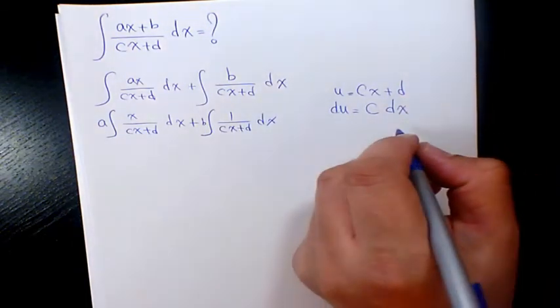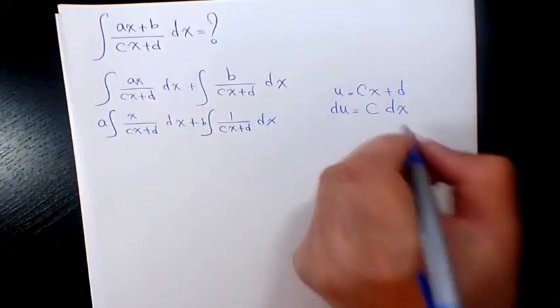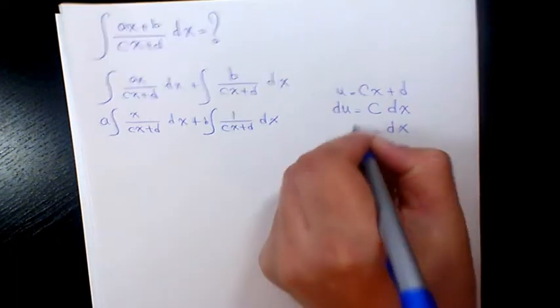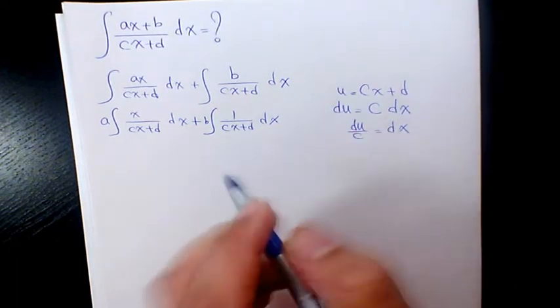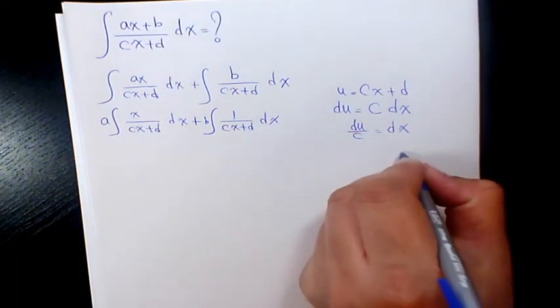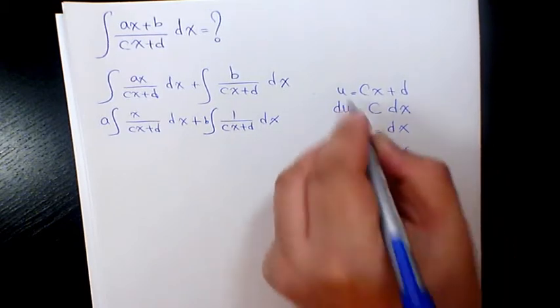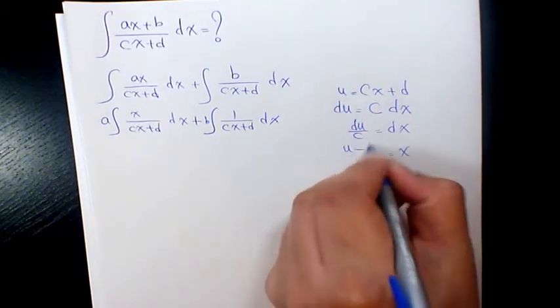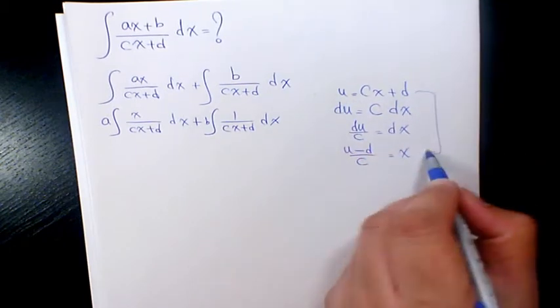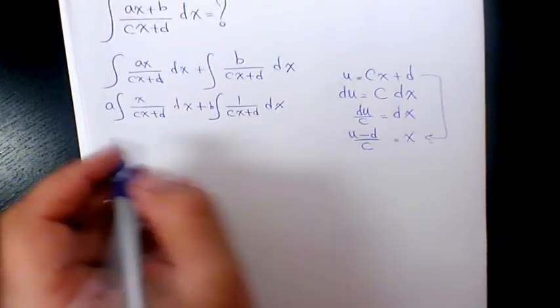It means that dx will be du over c, and x will be u minus d divided by c based on this formula. So substitute there.